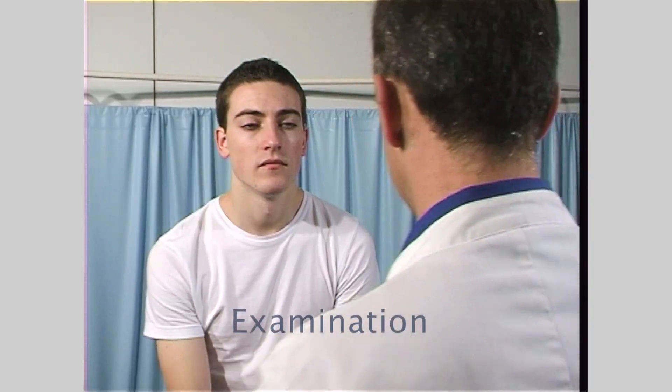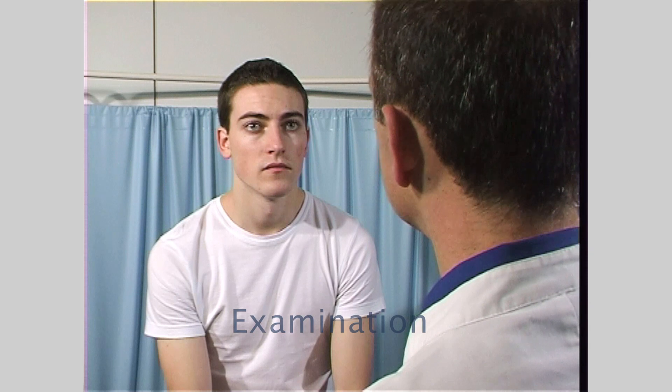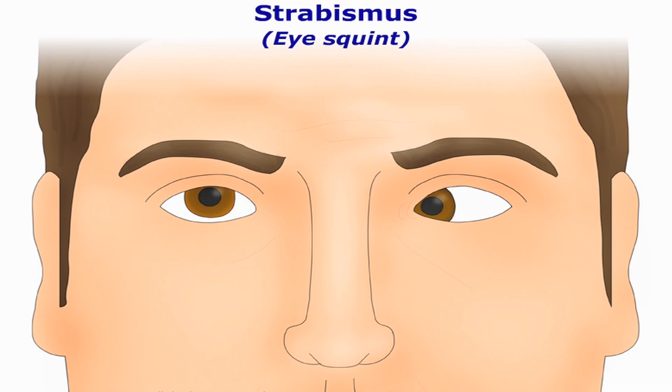Begin with observation. Note the level of the eyelids — is there any evidence of ptosis, that is droopiness of the eyelids? Observe the symmetry and position of the eyes. Strabismus, or squint, may become more evident when the affected eye is moved towards the direction of the affected muscle. The patient may be tilting the head to one side in a long-term attempt to compensate.